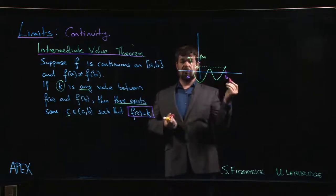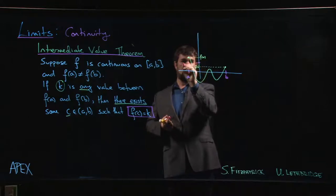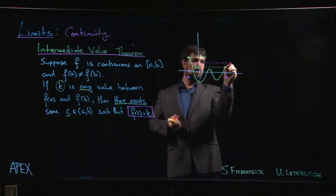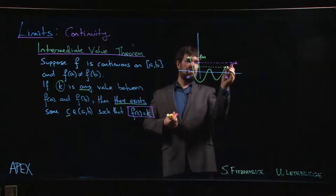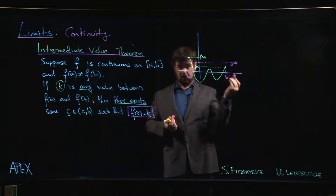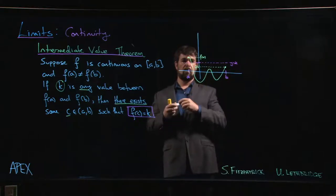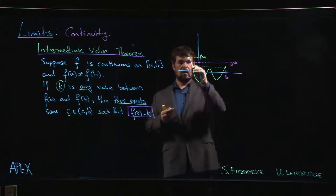What the Intermediate Value Theorem says is choose any y value between f of a and f of b, let's say this one. You're guaranteed that the function attains that y value at some point. If we just draw the horizontal line y equals k, what it's saying is that there's got to be some point where that line crosses the graph.